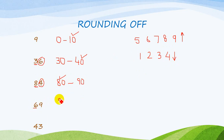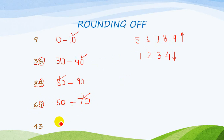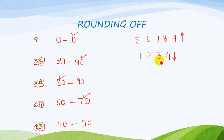Number 69 is present between 60 and 70. The digit 9 is on the units place, so I round it up to 70 — moving to the bigger multiple of ten. Then I have 43, which is present between 40 and 50. The digit 3 is on the units place, so I round it down to 40.